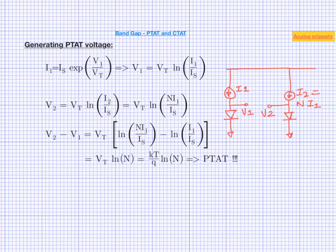k and q being fundamental constants do not change with anything. And N being the ratio of two similar kind of things is one of the most precise things that we can build on silicon.